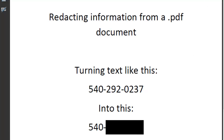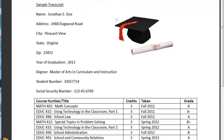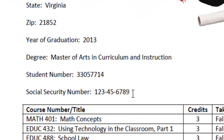Here's our transcript from a fake university. What I want to do is make my social security number invisible, and probably my student number as well. To do so we're going to use a fancy term called redaction. Redaction is just another way of saying take a big black marker and mark out that which you don't want the public to see.